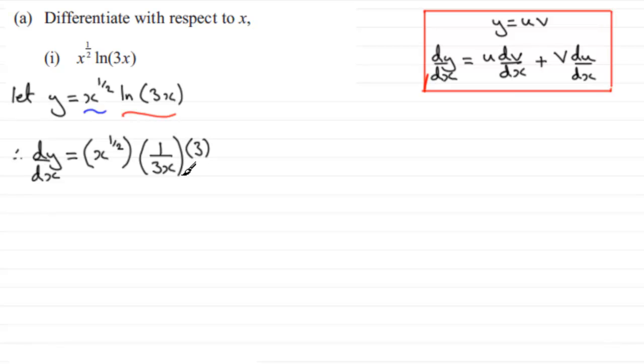Okay, let's move on. Plus here, and then we do natural log of 3x, put in brackets, natural log of 3x multiplied by the differential of x to the power half. Well that's going to be a half x to the power minus a half.